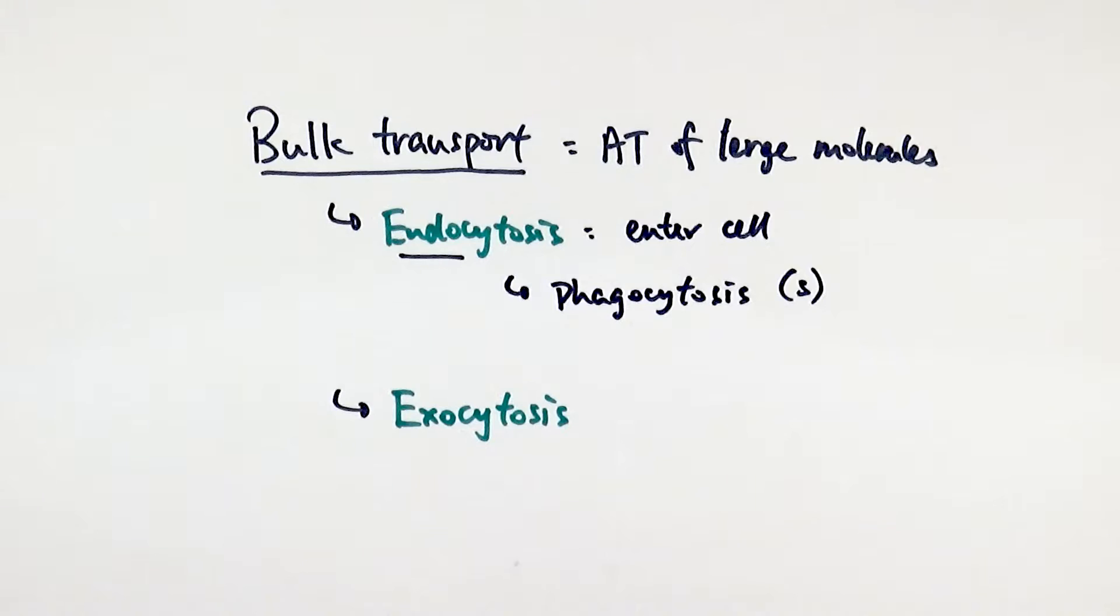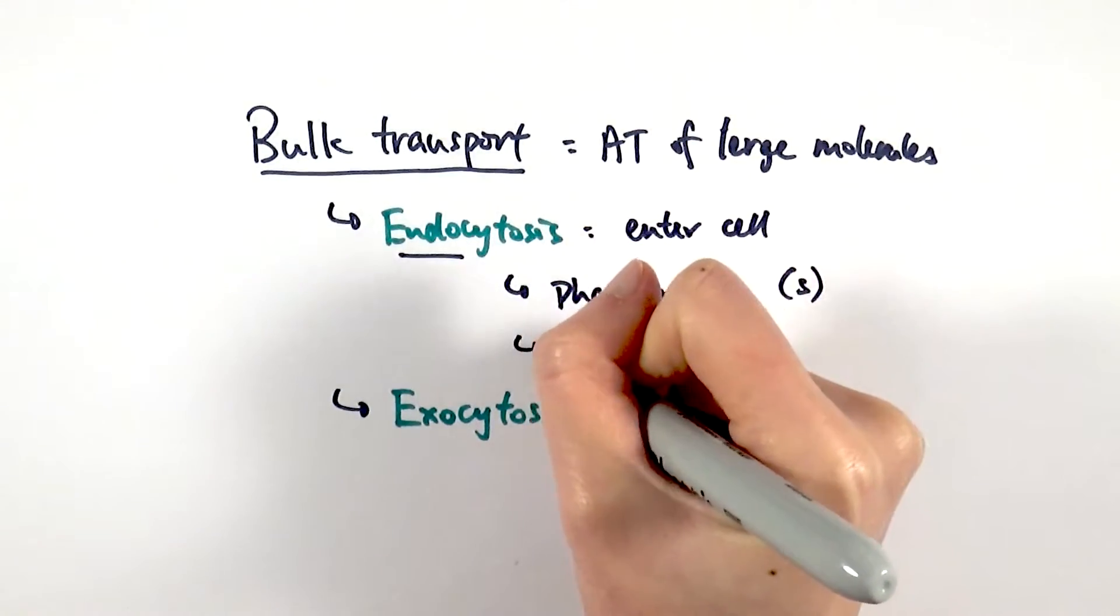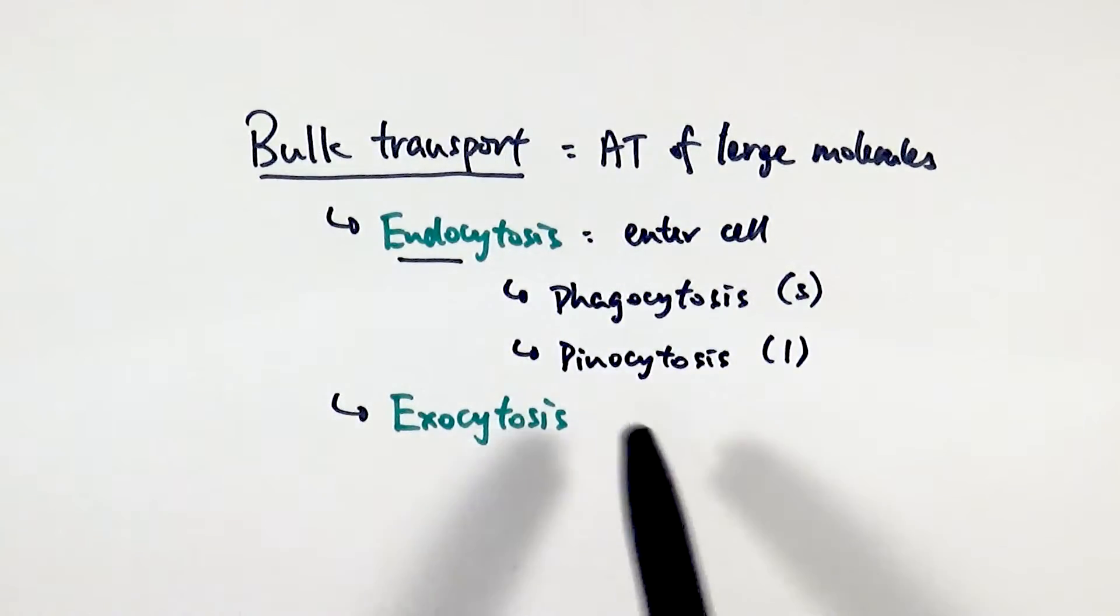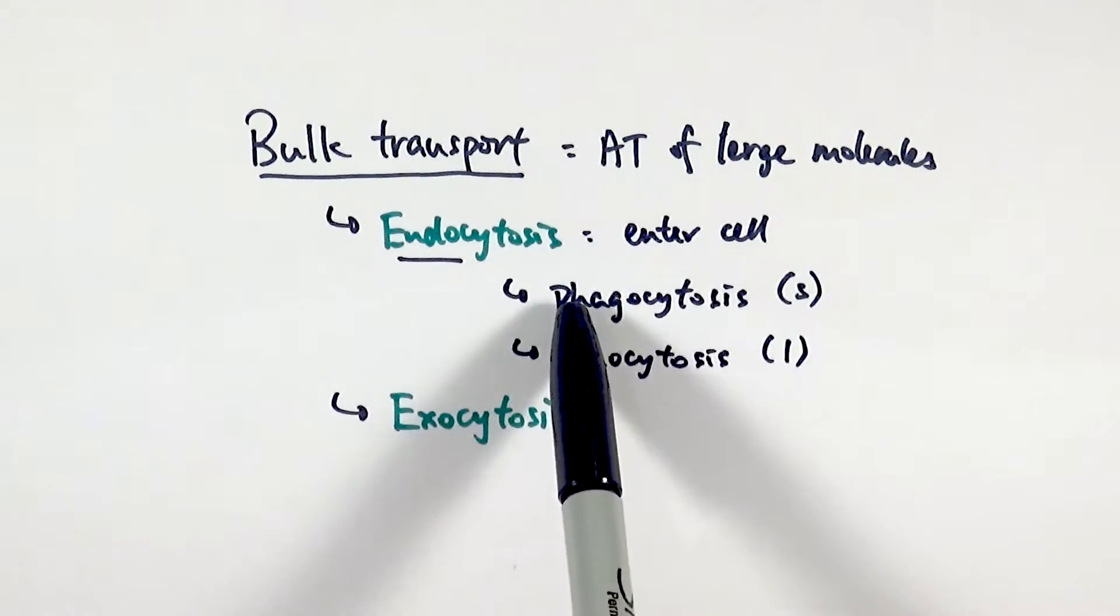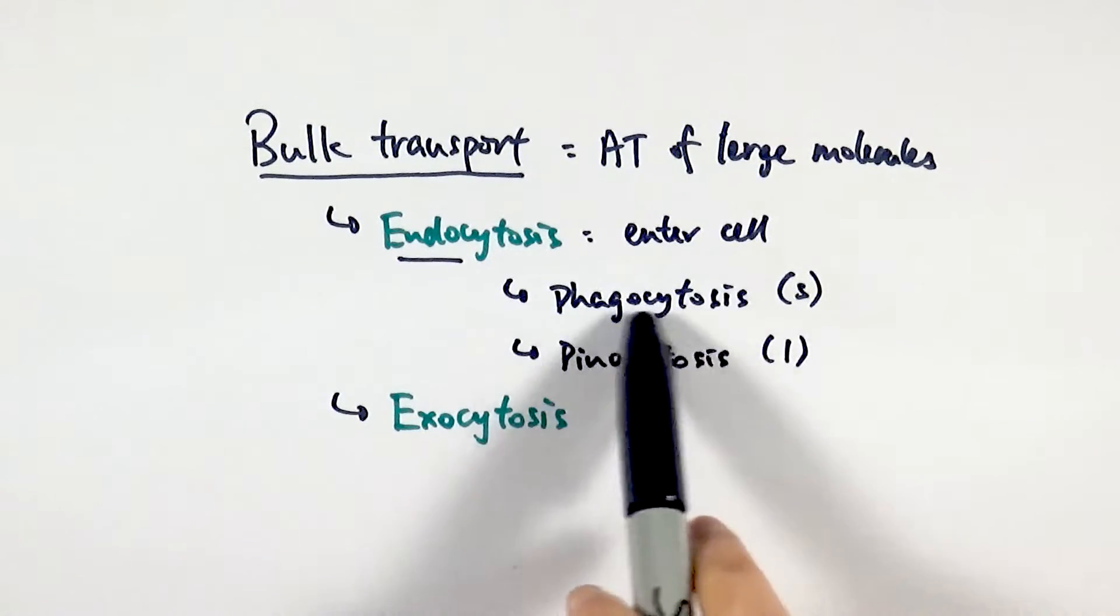A classic one would be about when the white blood cells or phagocytes are trying to engulf pathogens to digest them and kill them. That is phagocytosis. Or we can also have something called pinocytosis, which is engulfing liquids, but that is less likely to come up in exams, but more phagocytosis because of the major links it has to the immune system and how it works.